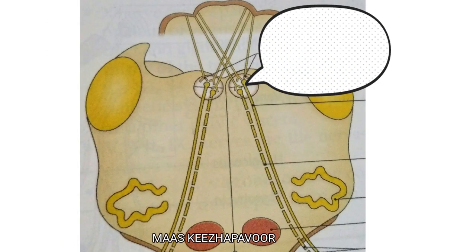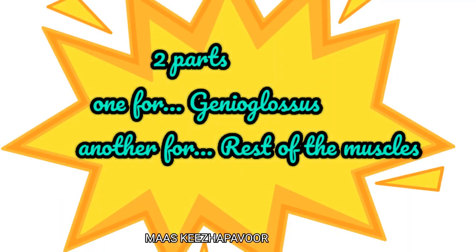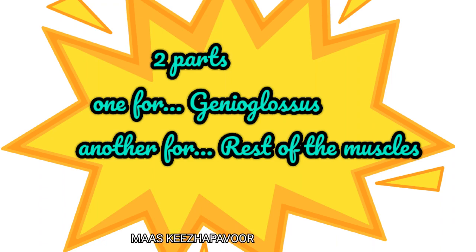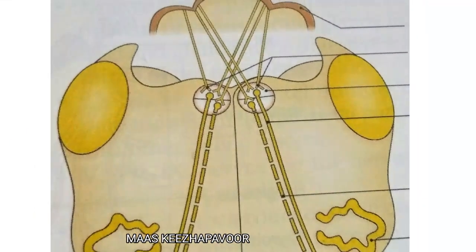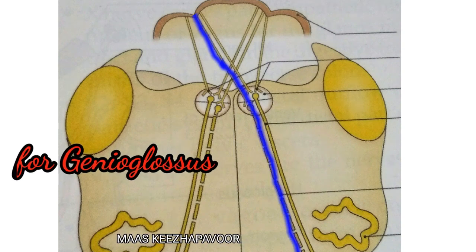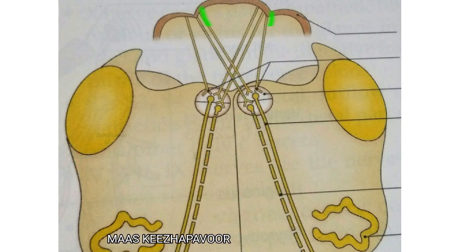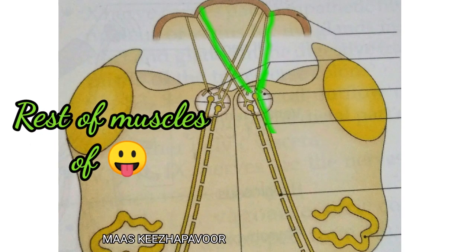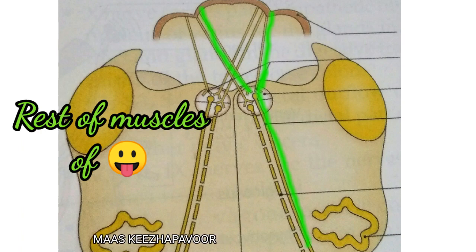It is 2 cm long and is divided into two parts: one for genioglossus muscle and another for the rest of the muscles. The part for genioglossus receives only contralateral corticonuclear fibers. The part for the rest of the muscles receives both ipsilateral and contralateral corticonuclear fibers.